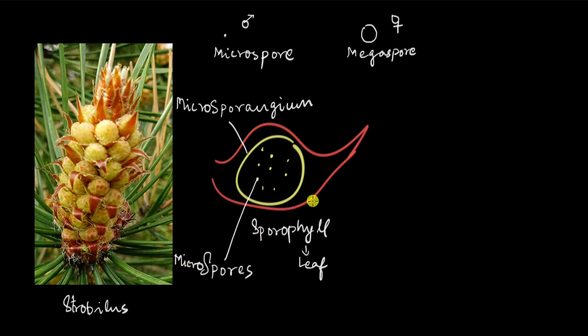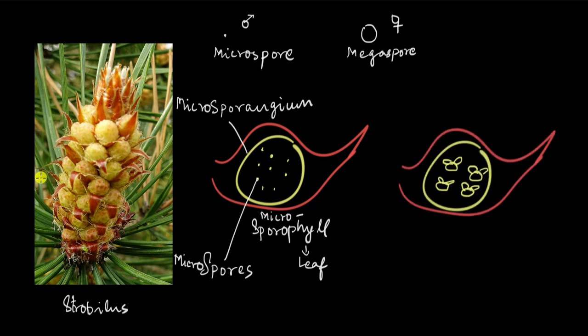The sporophyll is the microsporophyll. The microspores are produced inside the microsporangium, and with time the spores mature to form pollen grains. Each pollen grain is nothing but the male gametophyte.